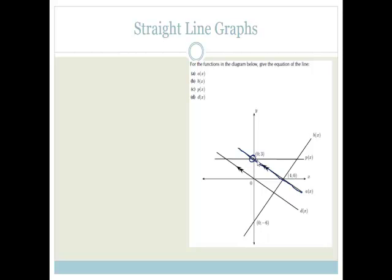A(x) goes through the y-axis at (0, 3) and the x-axis at (4, 0). The equation of a straight line is y = mx + c, where m is your gradient and c is your y-intercept. So we know the y-intercept is 3, so we can write y = mx + 3.